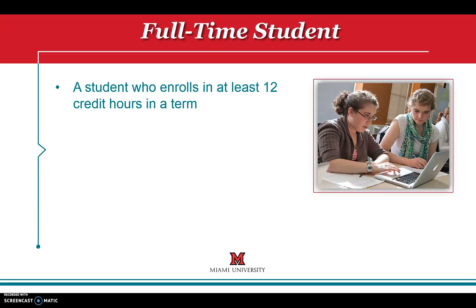A full-time student is a student who enrolls in at least 12 credit hours during the fall or spring semester. Enrolling in fewer than 12 credits during fall or spring semesters means the student is a part-time student — in other words, they are not going to school full-time. International students must be full-time students for visa purposes.